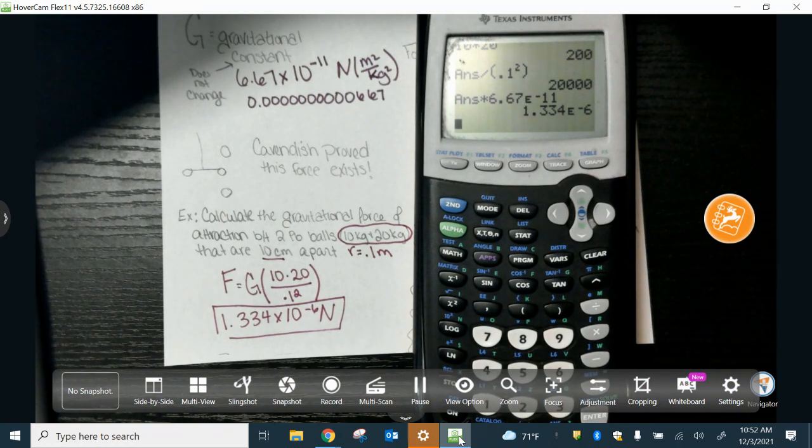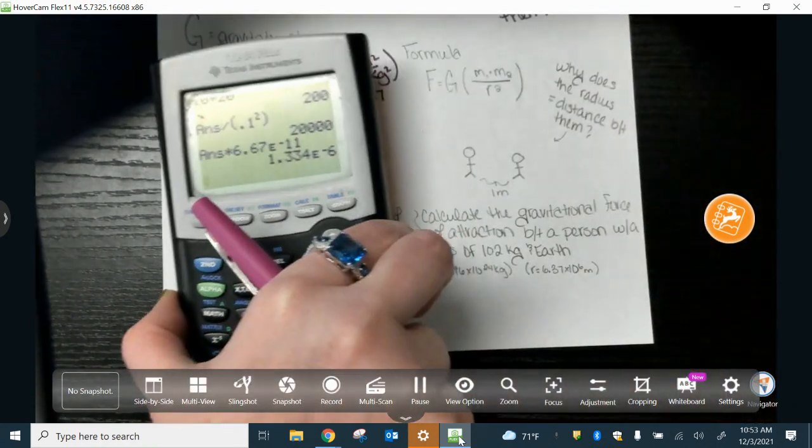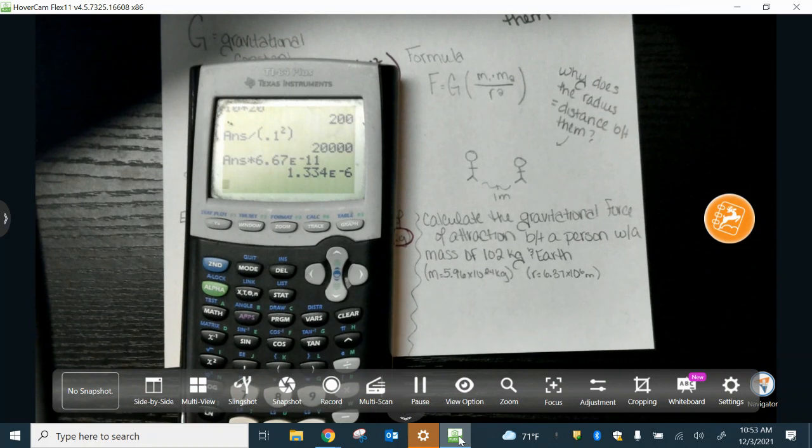And the units from that gravitational constant do cancel out because this becomes kilograms squared up here, and it cancels out with this one. This is meters squared, and it cancels out with this one, so we are just left in newtons. All right, Miss Clark, does it seem that hard? This is easy. You can write E. You better not give me 1.334 minus 6 newtons, though. That would be wrong. But if you want to write 1.334E times E negative 6, that's fine.